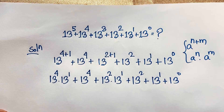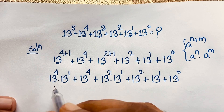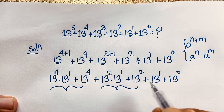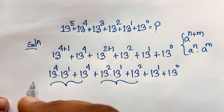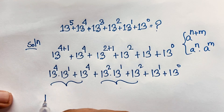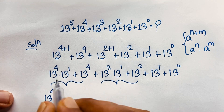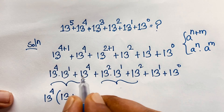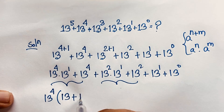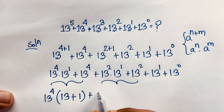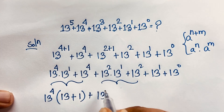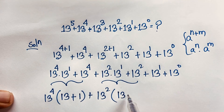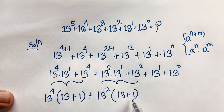Now, at this moment, you can see here 13 power 4 is common, and 13 power 2 is common. So I take 13 power 4 as common — this divide this is 13, plus this divide this is 1. And here 13 power 2 is common — so this divide this is 13, and this divide this is 1.